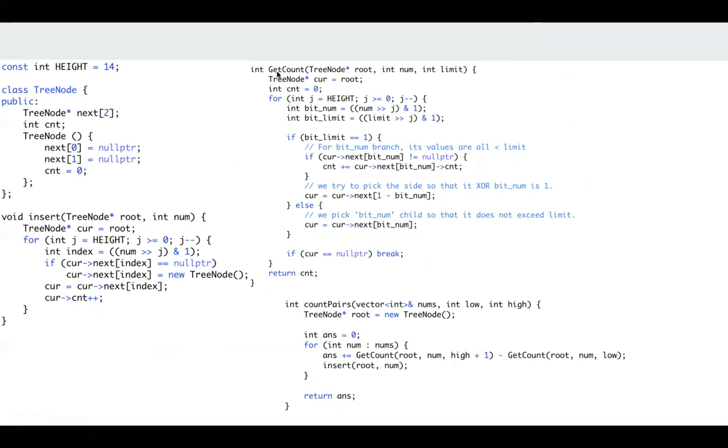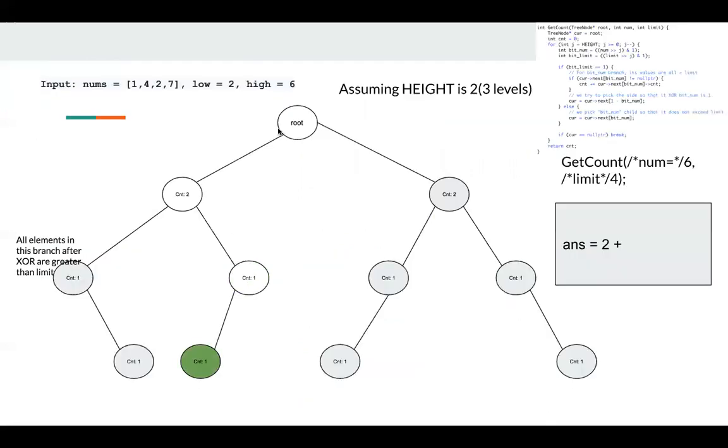Next, we have the most difficult part, the getCount function. It returns how many numbers in my Trie after XOR with my num, and the value is smaller than limit. The most difficult part is the if-else branch. The best practice is to draw some nodes like this, and we can go through some examples.